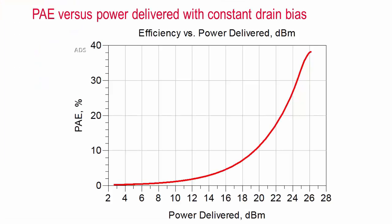Okay, let's get started. This is a plot of the PAE versus power delivered of a power amplifier with a fixed drain bias. The PAE is reasonable as long as the input signal is high enough to keep the amplifier operating near its peak efficiency.